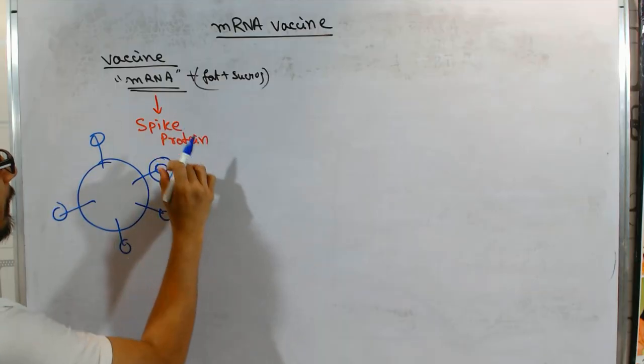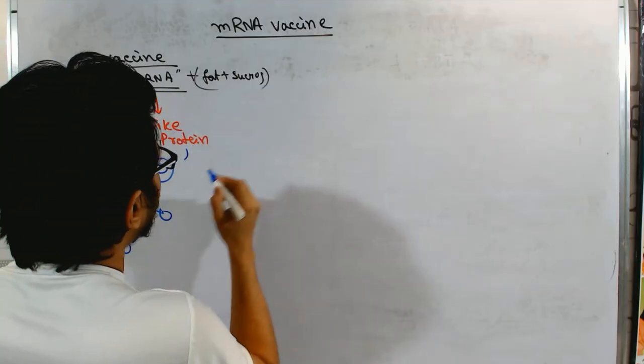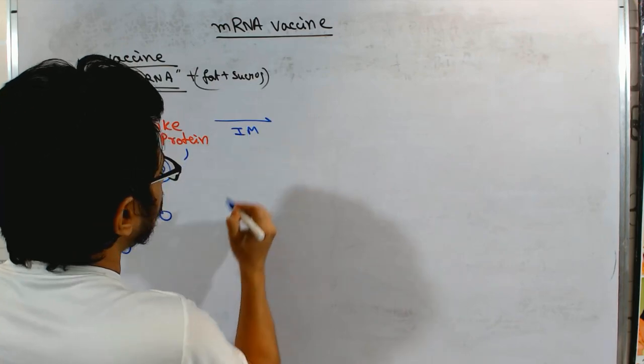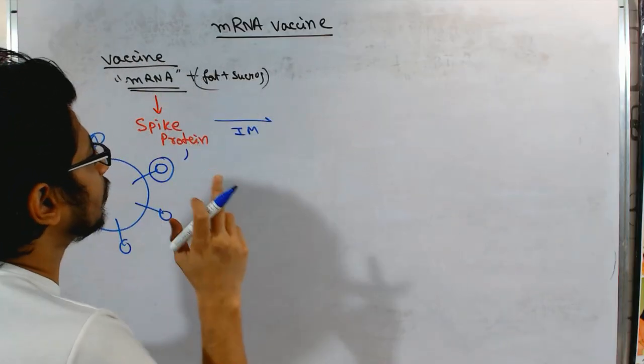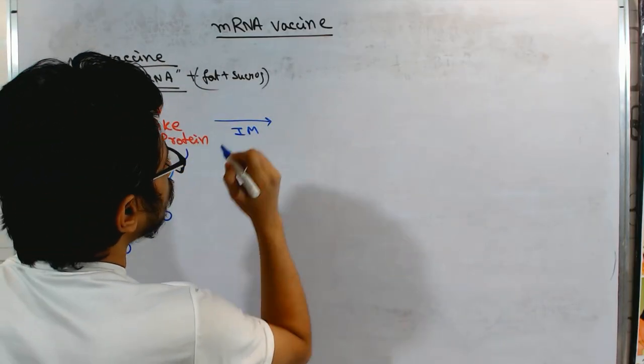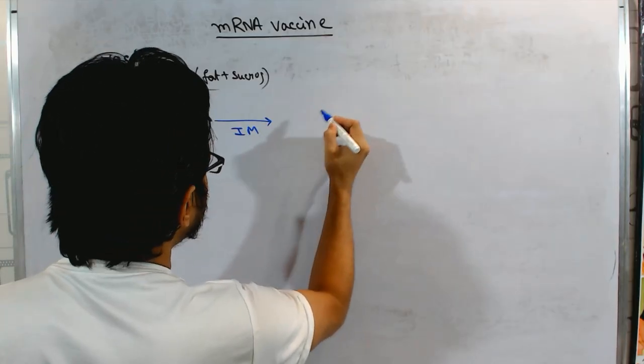The mRNA that makes the spike protein, that is what we take. And now this mRNA is inserted in our body intramuscularly through muscle. For example, we take the injection, mRNA is inserted, mRNA for the spike protein is inserted. Now what will happen is that the cells will take up this mRNA, immune cells, our immune cells.